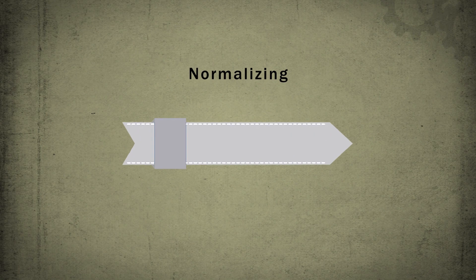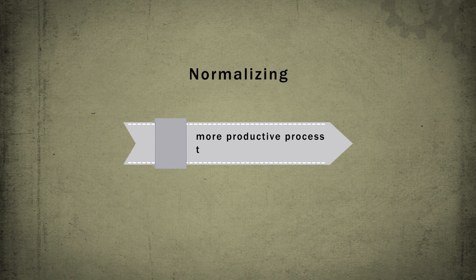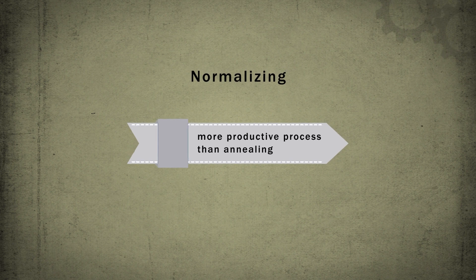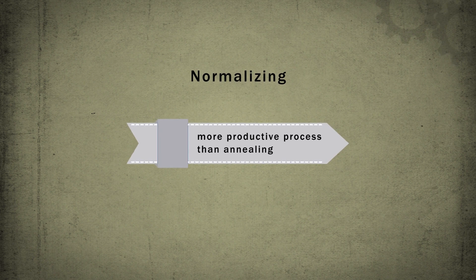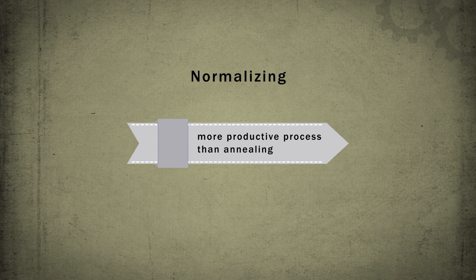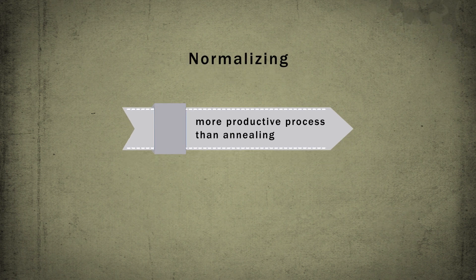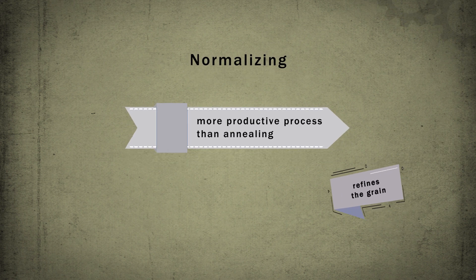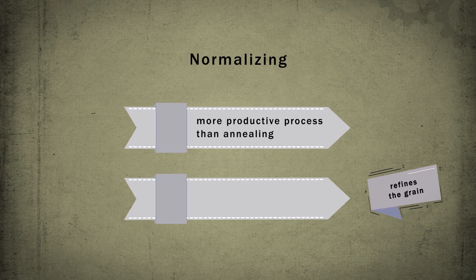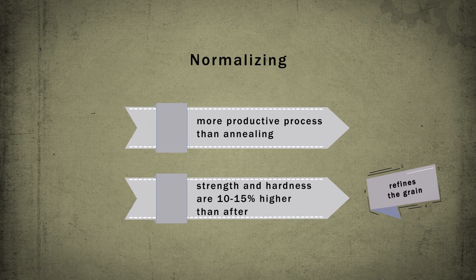Normalizing of steel, in comparison with annealing, is a shorter term heat treatment process and therefore it is more productive. After normalizing, alloys acquire a fine-grained structure and higher strength and hardness than after annealing.